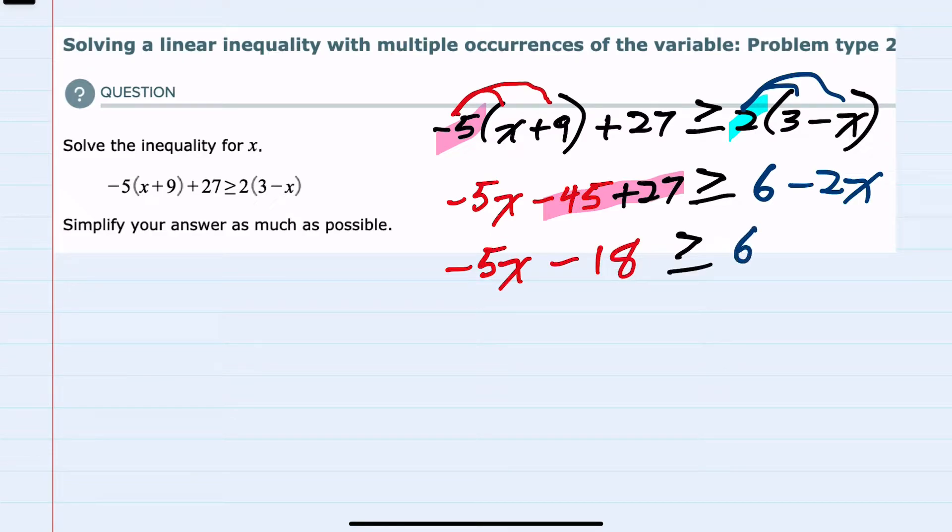At this point, all I've done is simplified the left hand side and the right hand side. From here, I want to get the x's on the same side. It doesn't matter if it's the left or the right, but to get the x's together. Since I have negative 5x on the left and negative 2x on the right,